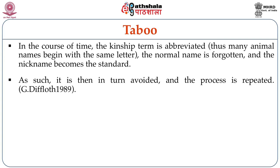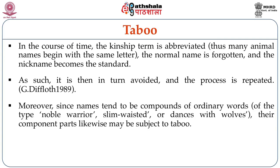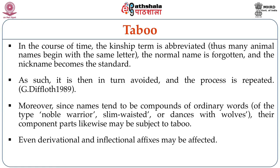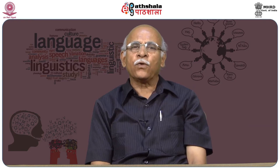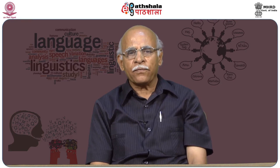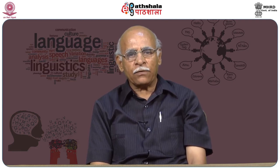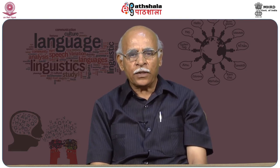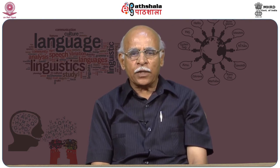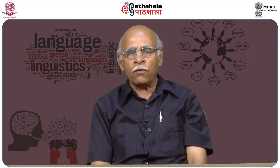This kind of taboo has been reported by scholar Geralt de Flotte. Moreover, since names tend to be compounds of ordinary words of the type 'noble warrior', 'slim waster' or 'dances with wolves', their component parts likewise may be subject to taboo. Even derivational and inflectional affixes may be affected. The word 'tongue', due to taboo-induced deformation, has taken its toll to such an extent that the phonetic nature of the reconstructed word cannot be determined with greater precision. Taboo may lead to a considerable turnover in the lexicon, requiring the coining of many new words.